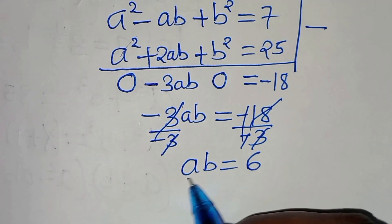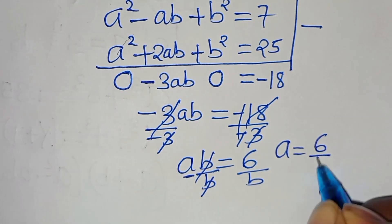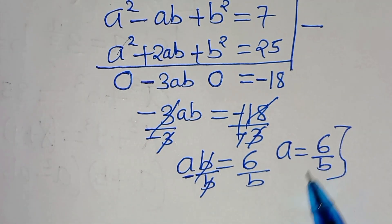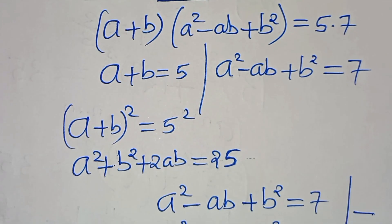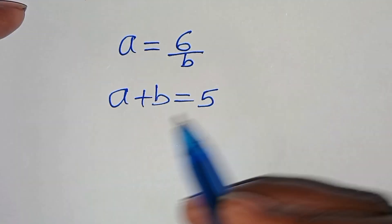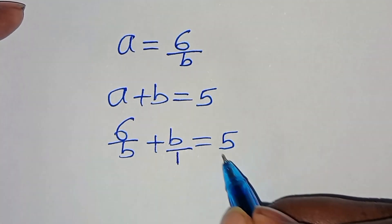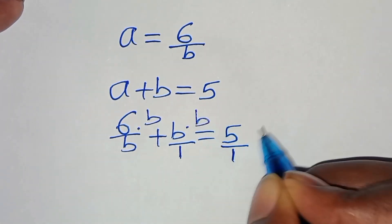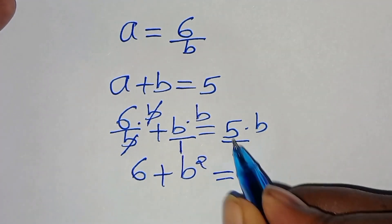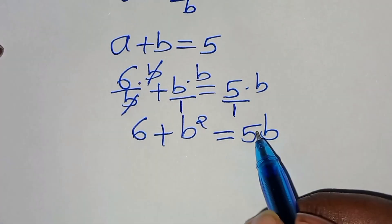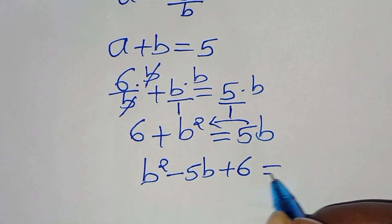Substituting a equals 6 over b into the equation a plus b equals 5, we get 6 over b plus b equals 5. Multiplying both sides by b gives 6 plus b squared equals 5b. Taking 5b to the left-hand side gives b squared minus 5b plus 6 equals 0.